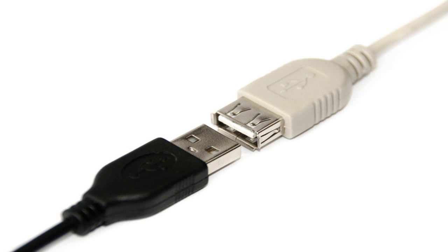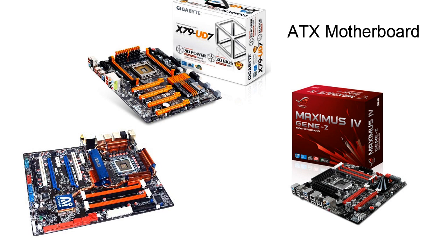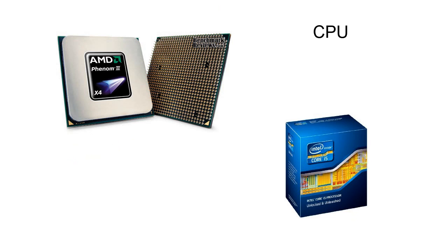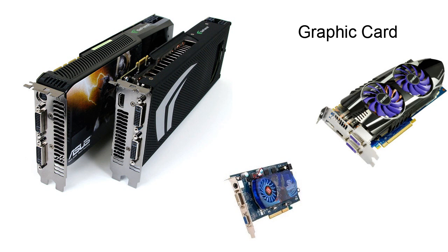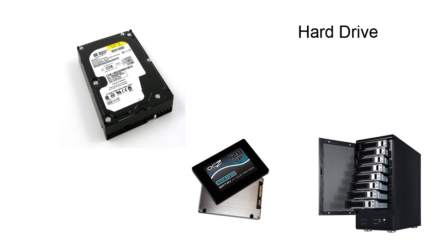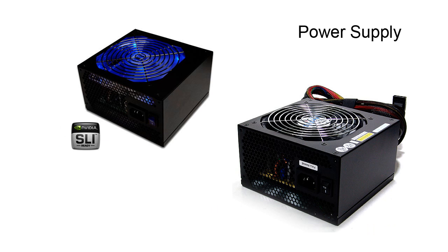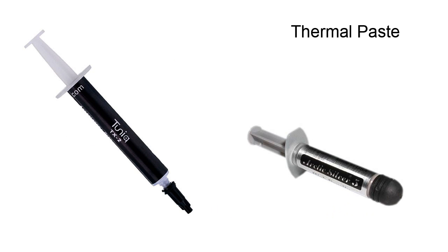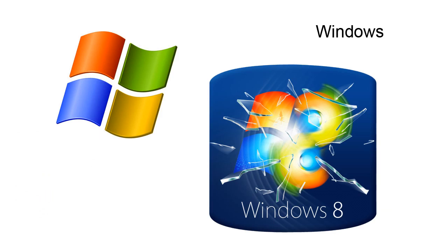The core pieces to building a computer are as follows: you will need an ATX motherboard, a central processing unit or CPU, a graphics card, RAM — usually 4 to 8 GB — a SATA hard drive, a power supply, an optical drive or DVD drive, thermal paste, and a computer case.